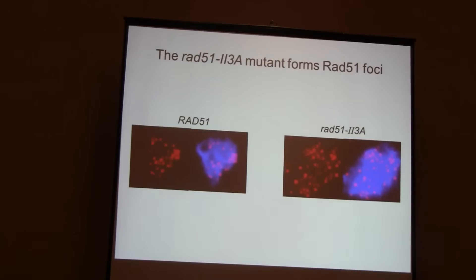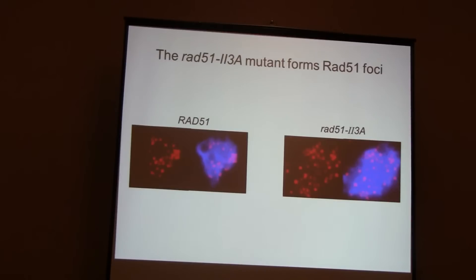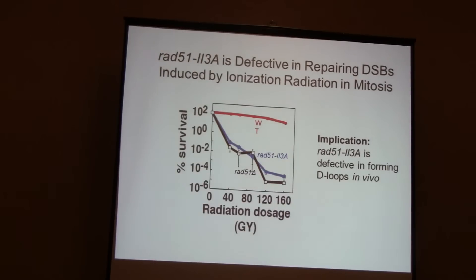Switching to in vivo: we have a mutant that binds DNA but can't undergo D-loop formation, and we want to know if that's also true in vivo. In an immunostaining experiment looking at Rad51 foci, the 23a mutant forms foci just fine. We know foci form at sites of double strand breaks — you need to make breaks to get these structures — so this is an assay for in vivo DNA binding.